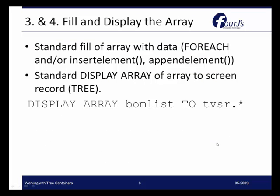The last two steps are simply to fill and display the array. Filling the array will be just like any other time you are loading an array — you'll be working in a for-each loop with a cursor, passing data to the array, or perhaps inserting or appending elements using those methods to build the array of data. Then once your array is filled you can display it to the screen record or tree container. This code here shows display array bill of materials list to the tree view screen record dot star — mapping the array to a screen record just as you would with any other array.